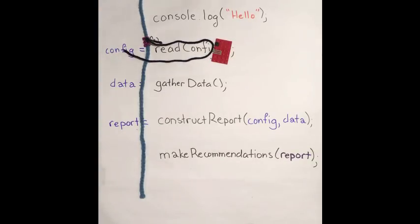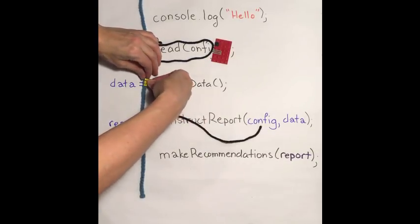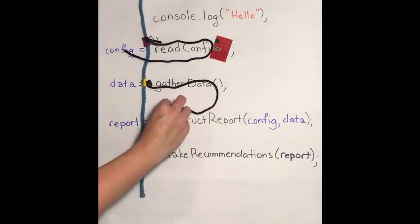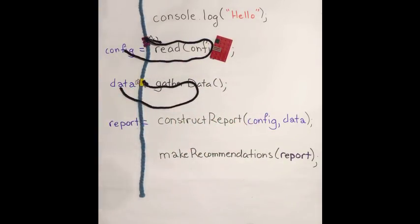The same thing with gather data. When it makes a promise, it splits off a new path of execution, which eventually will come up with some data, but in the meantime, our function returns immediately, and it returns the end of the string.